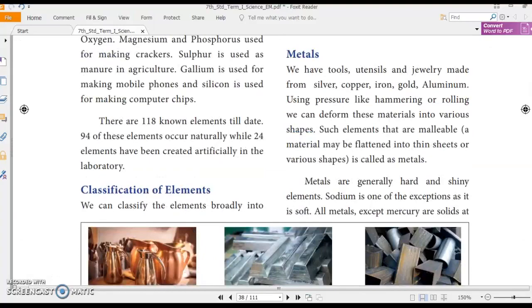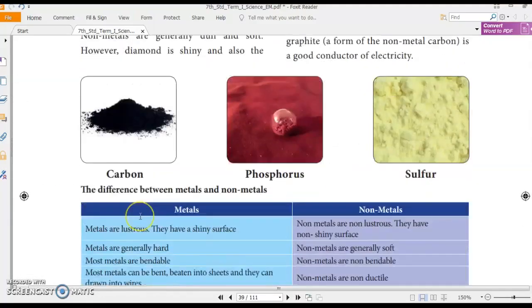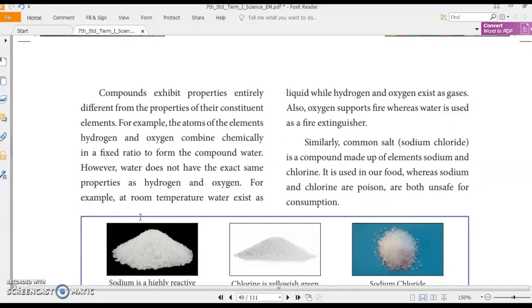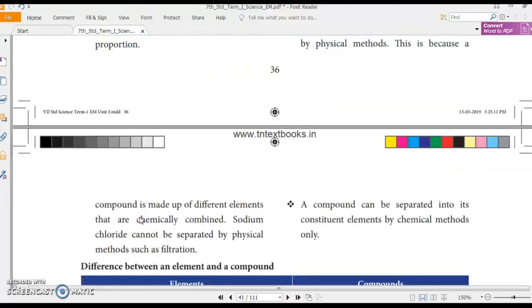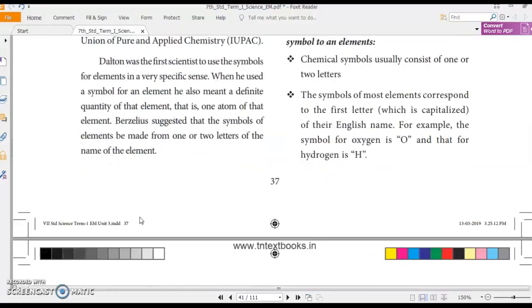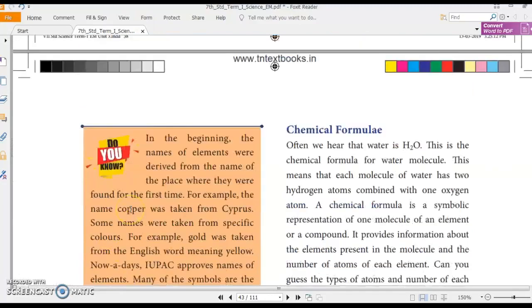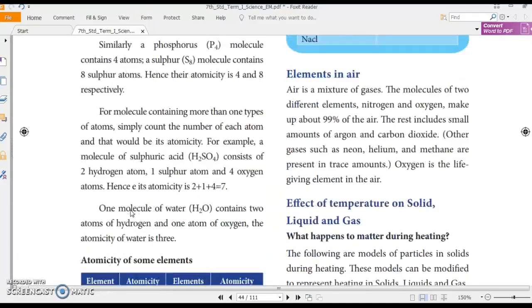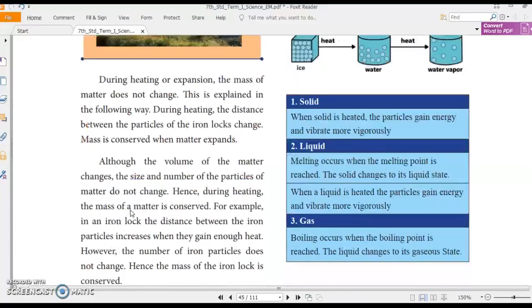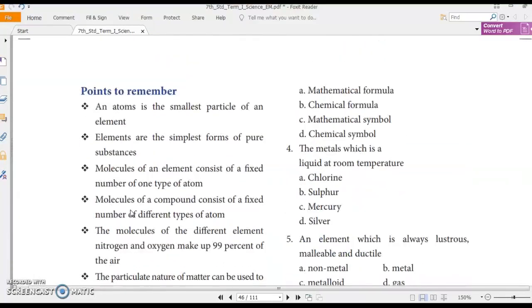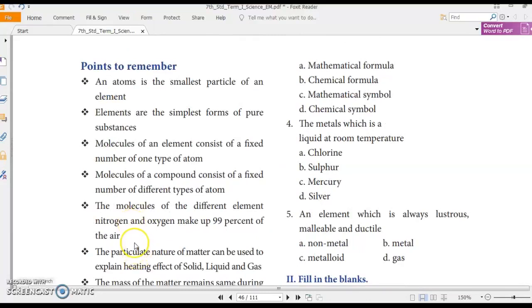Please go through the textbook and the video lecture and try to read as many books as possible. You can even google. Okay. I will come back with the rest of the chapter in my next video. So before winding up, let me just recollect some points. In today's lesson, we learned that an atom is the smallest particle of an element. Elements are the simplest form of pure substances. Molecules of an element consist of a fixed number of one type of atom. Molecules of a compound consist of a fixed number of different types of atom.